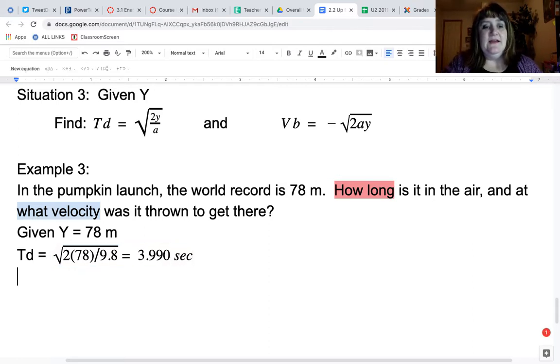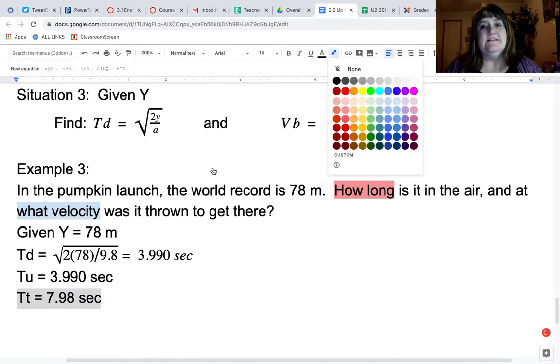If that's time down, that means time up is also 3.990 seconds. On the calculator it actually gives you 3.9897, which would round to be 3.99. You can't round it to 4. That means that the total time then is 3.99 times 2, which is 7.98 seconds. So how long is it in the air? 7.98 seconds.